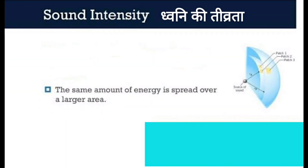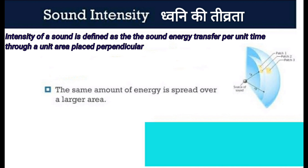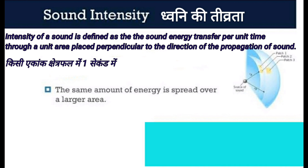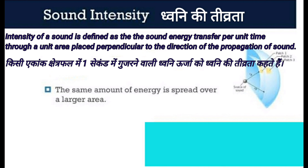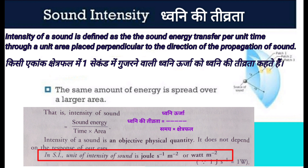Next is intensity of sound (dhvani ki tivrata). Intensity of sound is defined as the sound energy transferred per unit time through unit area placed perpendicular to the direction of propagation of sound. The intensity of sound equals sound energy divided by time multiplied by area. Dhvani ki tivrata barabar hoti hai dhvani urja upon samay guna kshetrafal. The SI unit of intensity of sound is joule per second per meter squared (J s⁻¹ m⁻²).